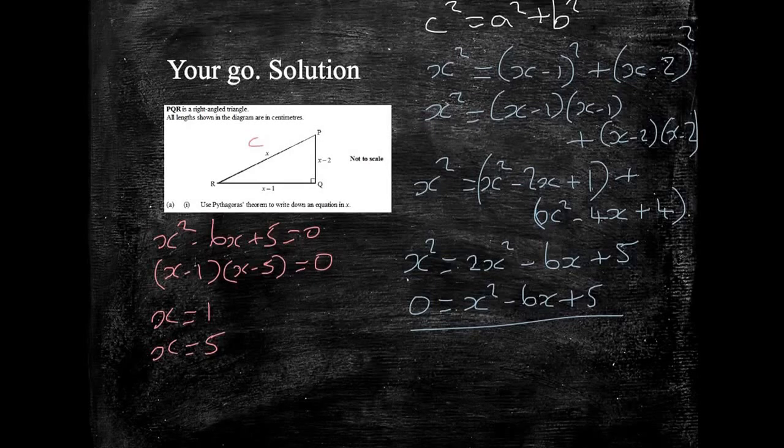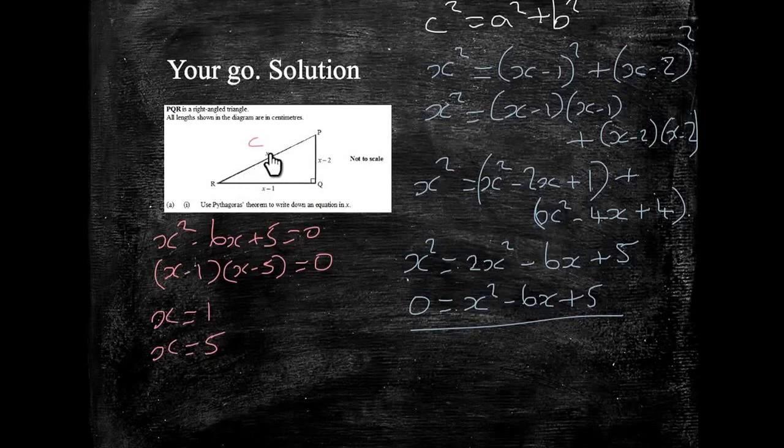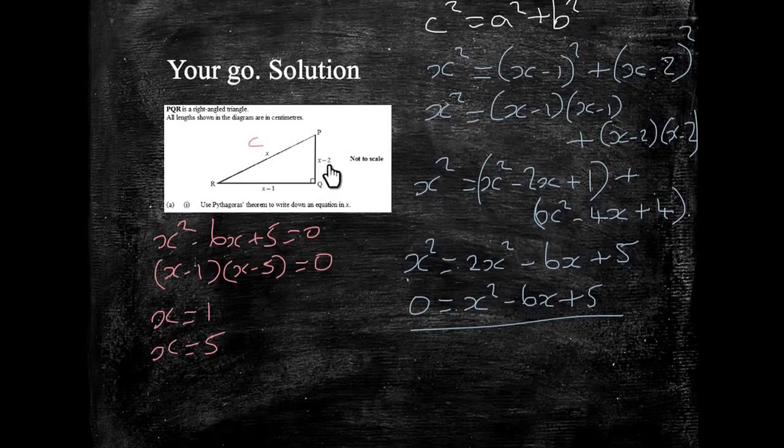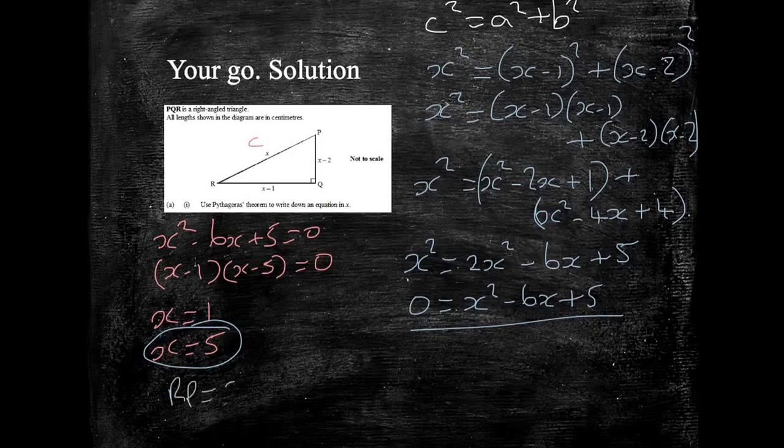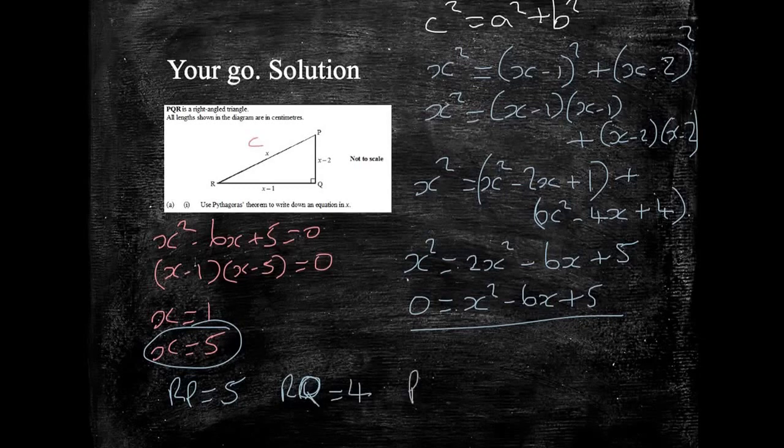We don't need to draw a graph at this point, but just so that it kind of keeps it fresh in our mind. Now, thinking about this, back at our question, we can't possibly have X being equal to 1. It doesn't make any sense. If I substitute 1 in here, it means I have a hypotenuse of 1. It means that RQ would be 0, and PQ would be minus 1. It's just nonsense. So the only thing it can be, X could be 5, which would mean that RP would be 5, RQ would be 4, and PQ would be 3, and these are all centimetres.